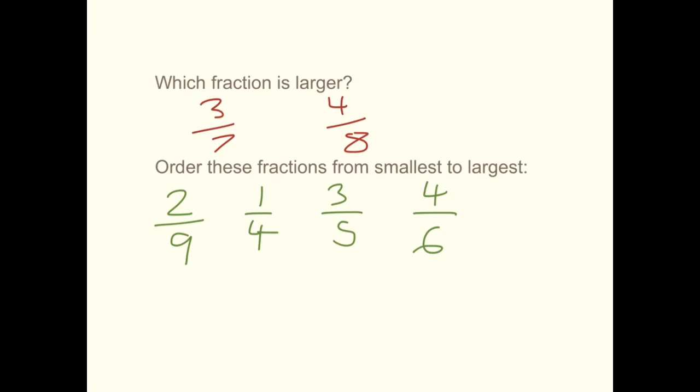Okay, so now it's your turn. All I would like you to do on your whiteboards is to have a go with these two questions. So the first one says, which fraction is larger? Three-sevenths or four-eighths? Have a go on your whiteboard like we did in this video. If you can't remember how to do it, please remember you can always rewind and watch that part again. Next, what I'd like you to do is to have a go ordering these fractions from the smallest to the largest. And again, re-watch the video if you're having any trouble. Alright then, good luck!